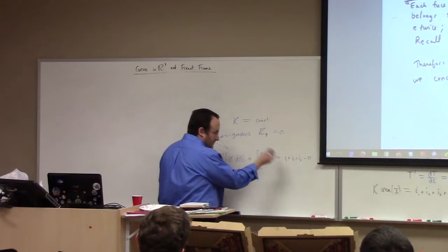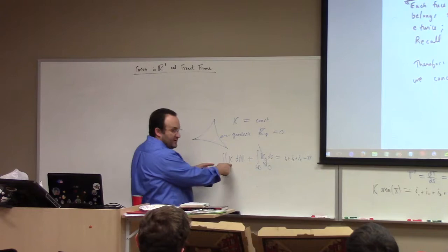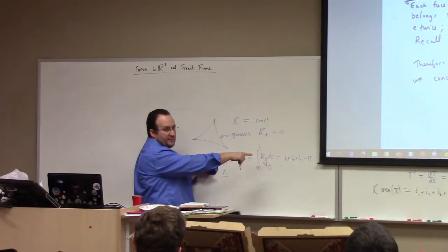If we have a geodesic triangle — so this integral is zero — and curvature zero, like in Euclidean space, then we have the sum of the interior angles in a triangle equals pi. That's the famous result.